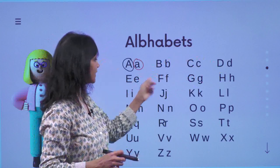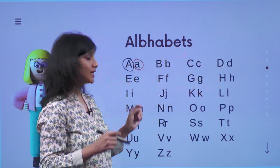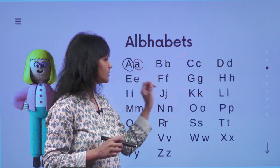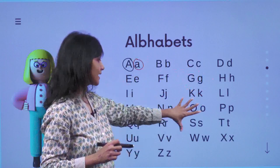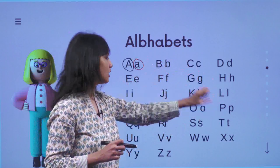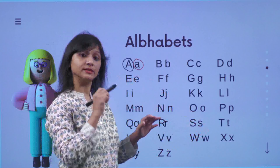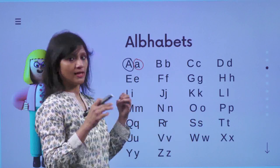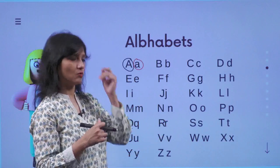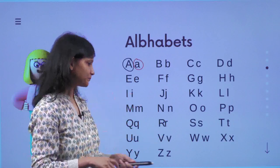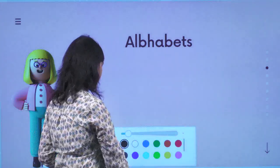Capital A, small a. Capital B, small b. Capital C, small c. Capital D, small d. Capital H, small h. Capital I, small i. Capital J, small j. Capital K, small k. Capital L, small l. Capital M, small m. Capital O, small o. Capital P, small p. Capital Q, small q. Capital R, small r. Capital S, small s. Capital T, small t. Capital U, small u. Capital V, small v. Capital W, small w. Capital X, small x. Capital Y, small y. Capital Z, small z. So when you write, you always have to be very careful about the capital and the small letters.